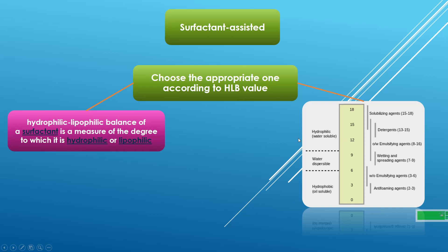Surfactants are classified into three groups. First, hydrophilic or water-soluble. Second, water-dispersible. And the third is hydrophobic or oil-soluble. The first group includes surfactants with an HLB greater than 10. The second group includes surfactants with an HLB between 6 and 10. And the hydrophobic group includes surfactants with an HLB lower than 6.